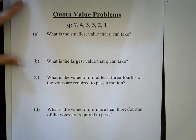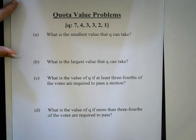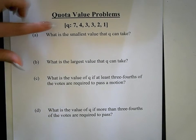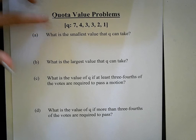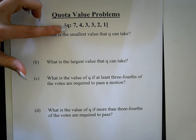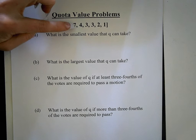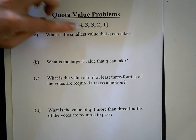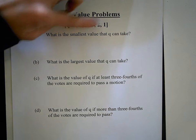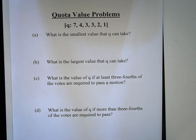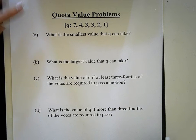Let's look at a quota value problem like one you'll have on your homework. We have a weighted voting system and we're trying to figure out what Q is going to be. We have player one, player two, player three, player four, player five, and player six — six players in this weighted voting system.